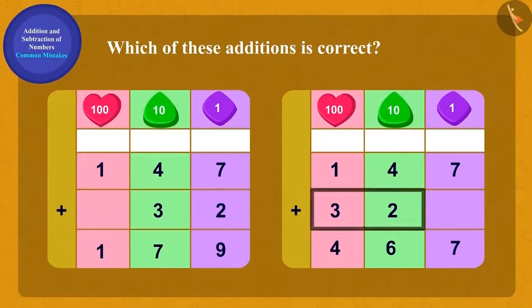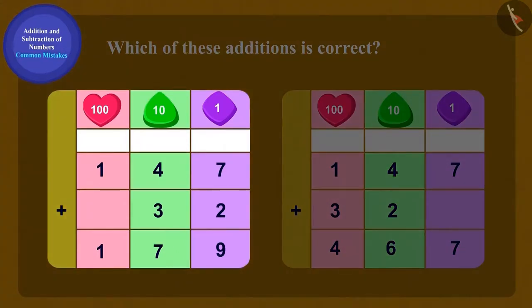In which place should we write three of 32? Tens. And two? Exactly in the ones place. Children, remember while writing any number you must take extra care to write its digits in the correct place.